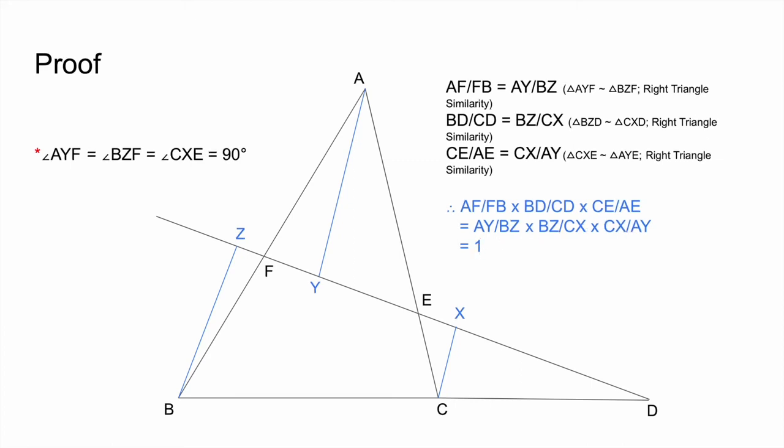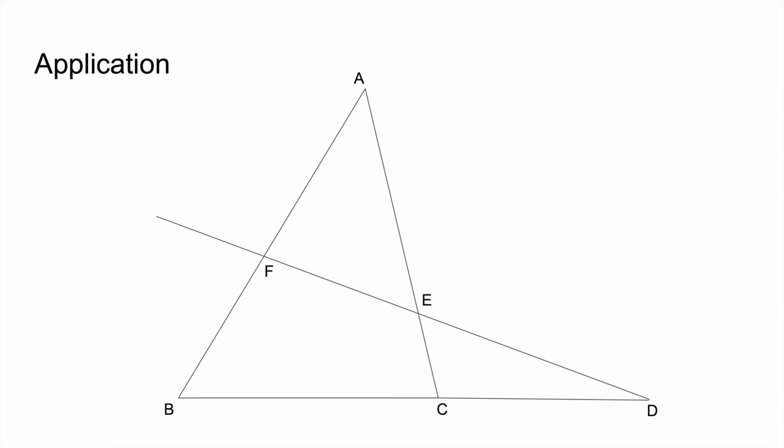All right, so next we're going to try and apply this by solving a problem. So here's the problem: AF equals 3, FB equals 2, BD equals 7, CD equals 3. And what's the ratio from AE to CE in this diagram? If you want, you can pause the video and try it yourself.